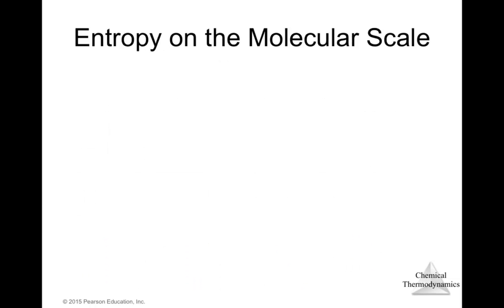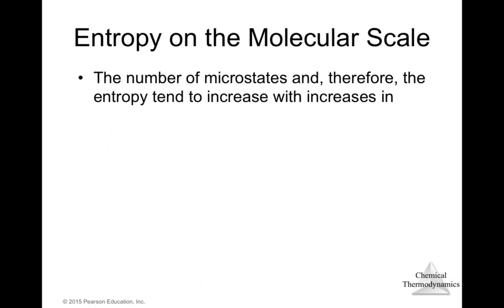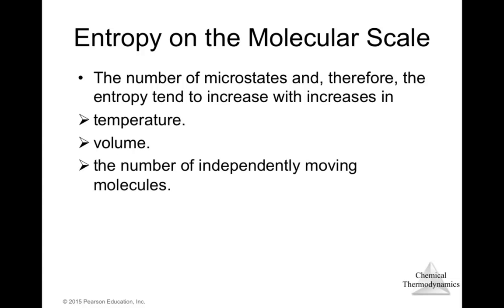The number of microstates and therefore entropy tend to increase with: (1) increasing temperature, (2) increasing volume — because greater volume leads to higher randomness, and (3) increasing number of independently moving molecules — as molecular movement increases, randomness increases.